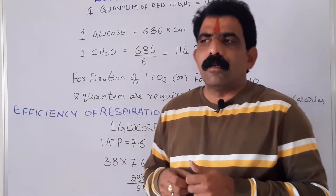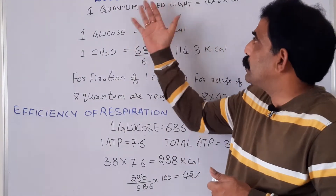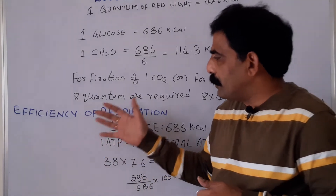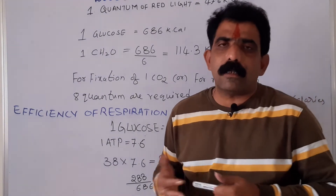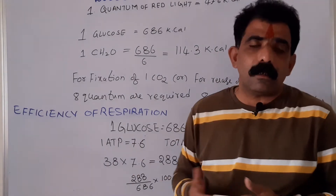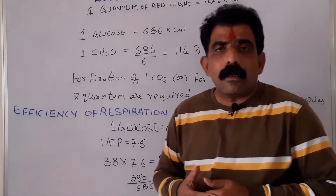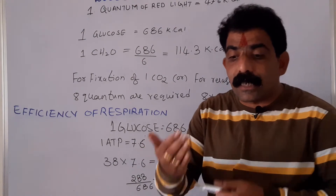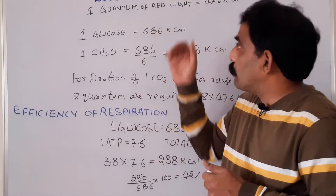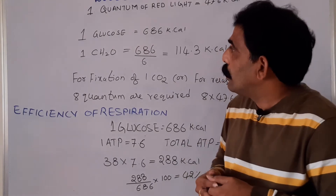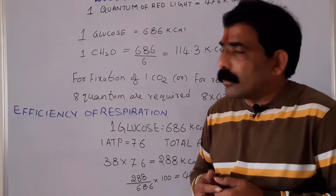Welcome. In this session I am going to discuss the efficiency of photosynthesis and the efficiency of respiration. The fraction of radiant energy that is converted into chemical energy during the process of photosynthesis is said to be the efficiency of photosynthesis. Here we know that the source of energy in nature is the sun, which consists of radiant energy.